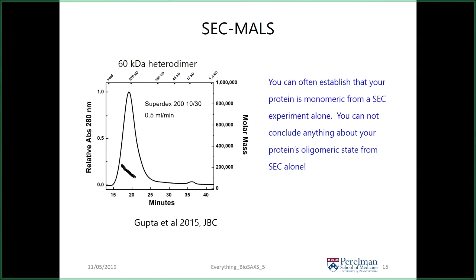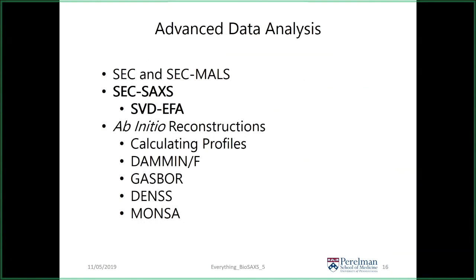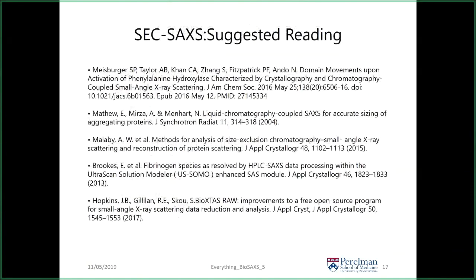By analogy, multi-angle light scattering and small-angle X-ray scattering aren't really that different — you're looking at the angular dependence of scattering, just using a different wavelength. This is an area that has really exploded over the last several years due to innovations at the beamlines, new software, and leveraging all that information. Here's a number of papers that are really useful for appreciating this developing space.